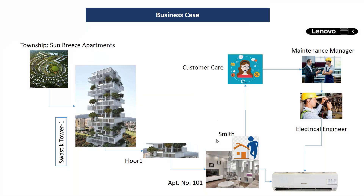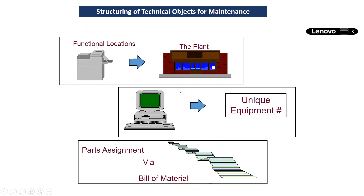Before this process — where a tenant calls customer care — we should have all the master data available in the system. That means we should have the function location and equipment set up, and this complete arrangement must be available in the system. Only then can we proceed with the maintenance initiation process. The function location provides a hierarchical structure, and based on that we can find the exact location as per our maintenance requirement.